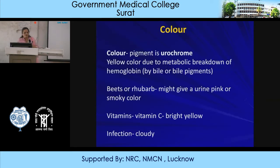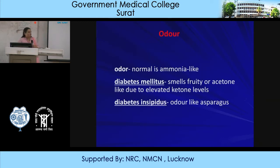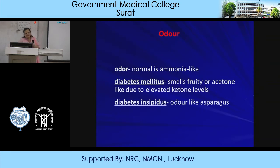The color pigment is urochrome, which is yellowish due to hemoglobin breakdown pigments and bile pigments. Beets or rhubarb and vegetables can change urine color to pink or smoky. Multivitamins give a yellowish color. Infection causes cloudy urine. Odor is usually ammoniacal. In diabetes, you have a fruity odor. In inborn errors of metabolism, the urine odor is typical. In diabetes insipidus, the odor is like asparagus.